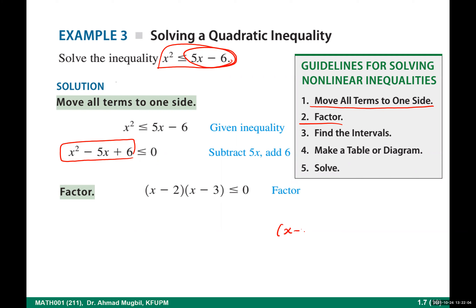Step 2: factor. We factor to get (x minus 2)(x minus 3). If it were an equation, we'd say x equals 2 or x equals 3. But here we have a product of two factors that is zero or less than zero. For the product to be negative, one factor must be negative and the other positive.